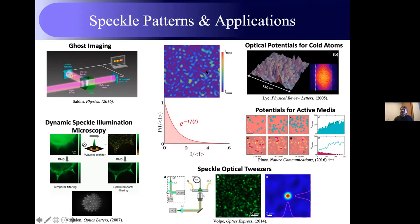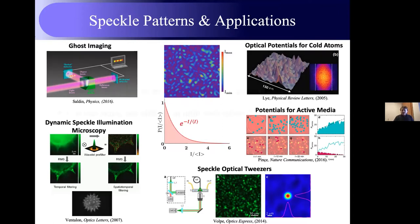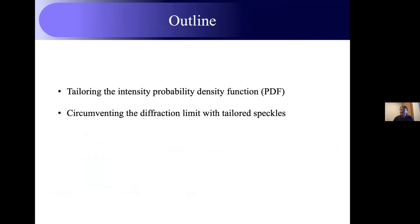The second property is the histogram of the intensity distribution — the probability density function has a negative exponential distribution. This means the probability of finding zero intensity is much higher; most regions are dark rather than having non-zero intensity. This type of statistics is generally called Rayleigh statistics. In this talk, I will first show how we can tailor this universal statistics using a spatial light modulator to engineer speckle patterns with different statistics. Secondly, I will talk about using specific patterns to circumvent the diffraction limit and generate sub-diffraction limited images.